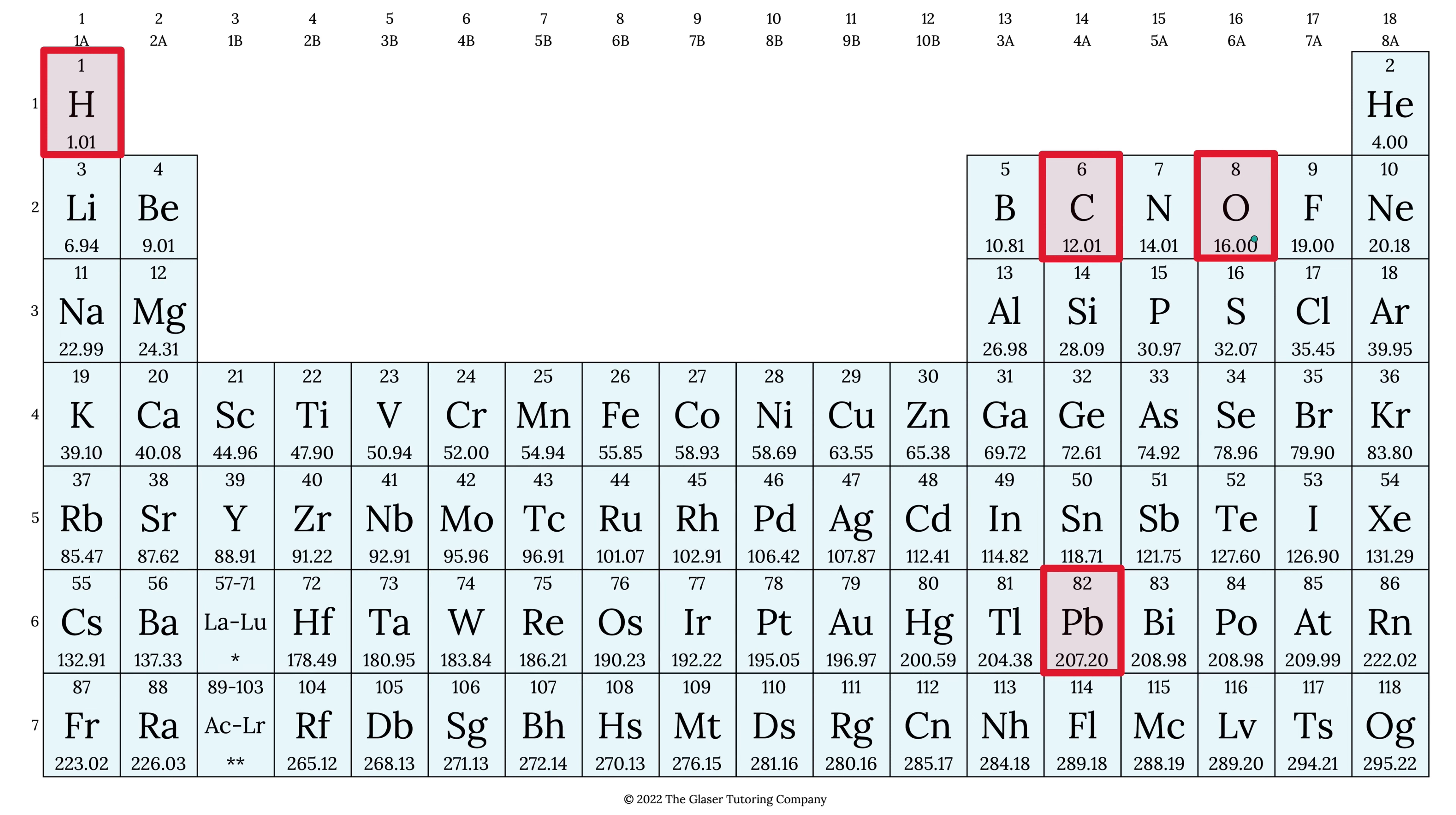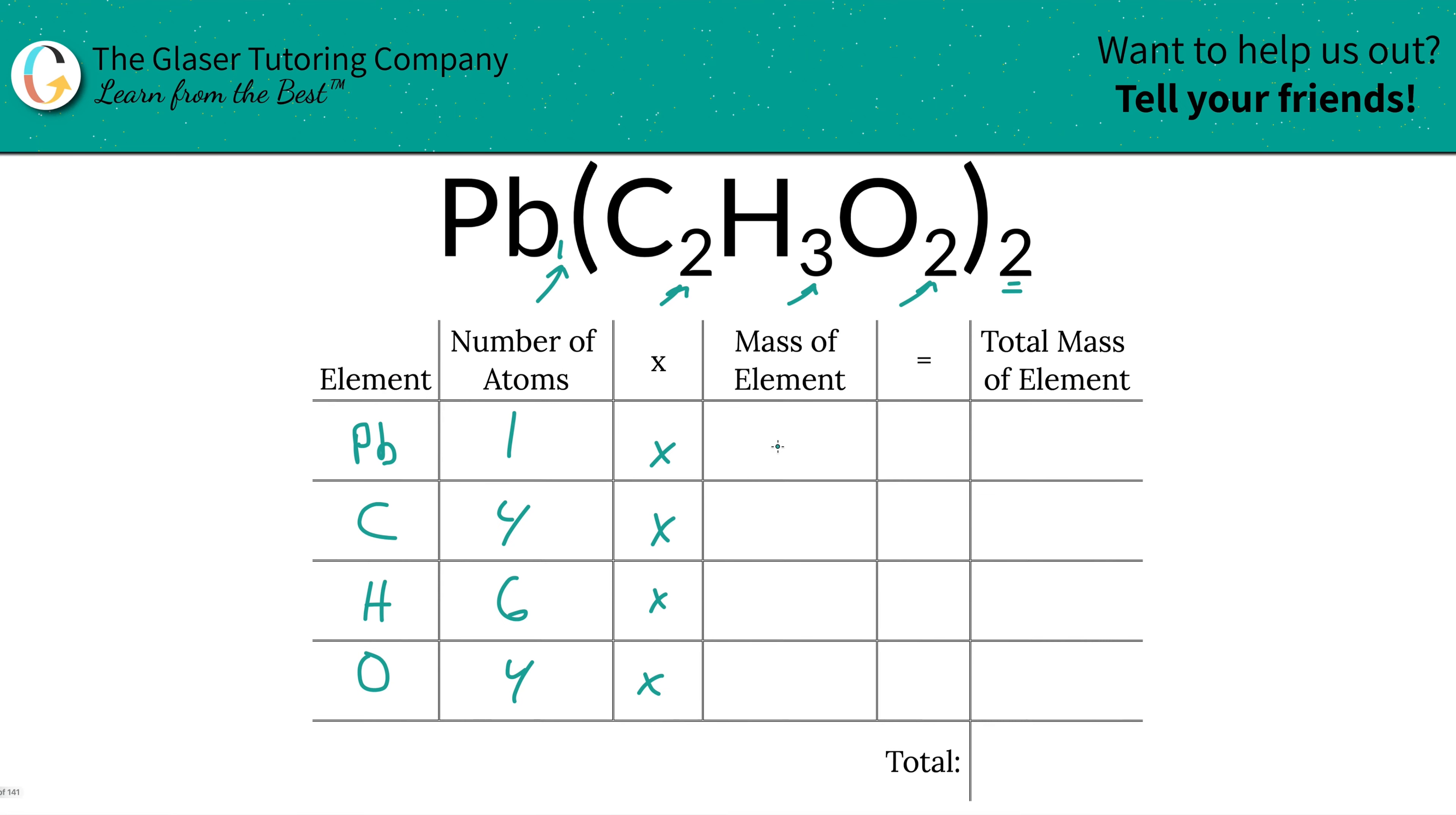So hydrogen is 1.01, carbon is 12.01, oxygen is 16, and lead is going to be 207.2. So those are the numbers we're going to write down, 207.20 for lead, carbon 12.01, hydrogen 1.01.